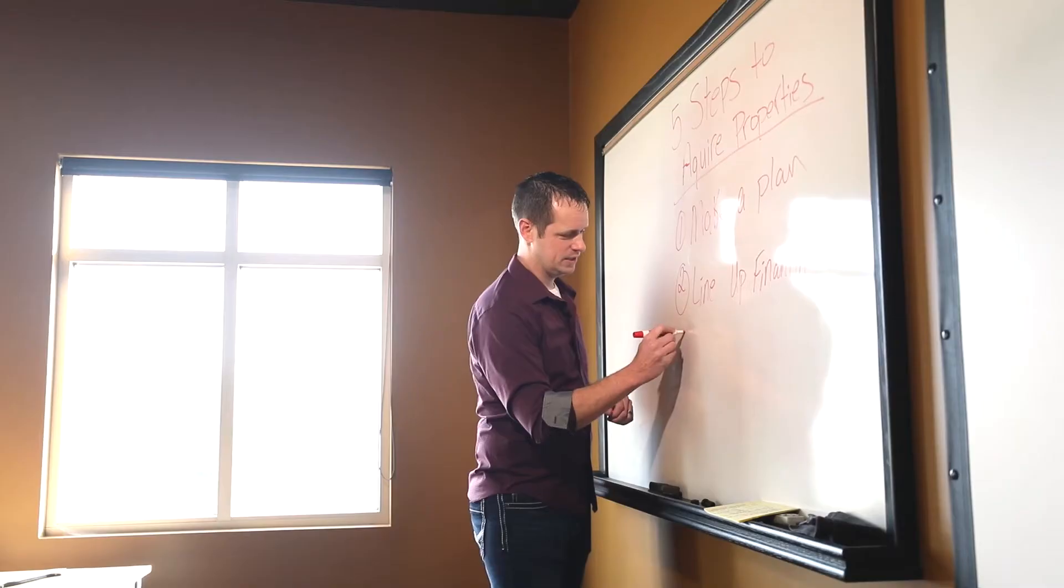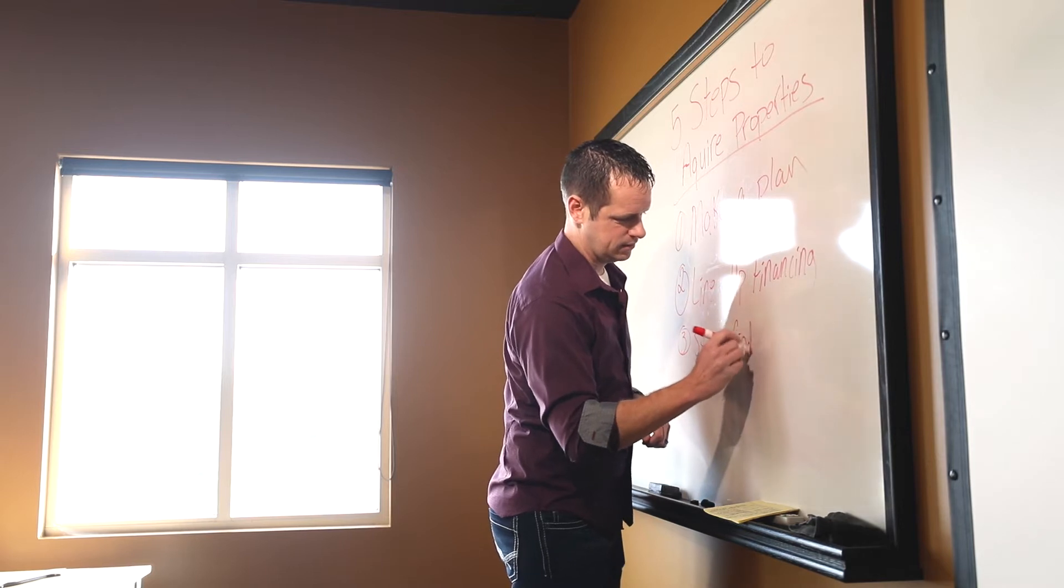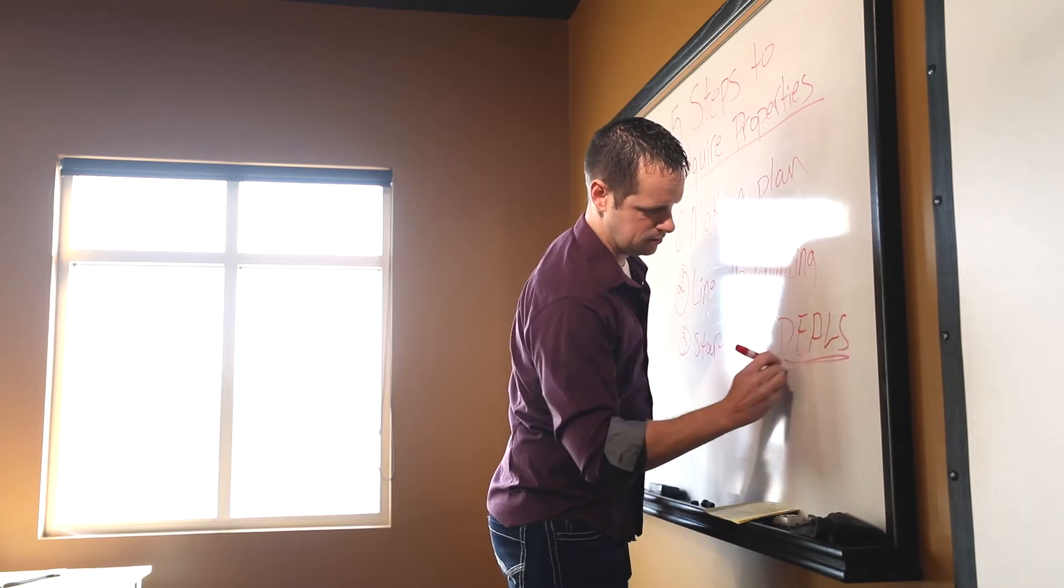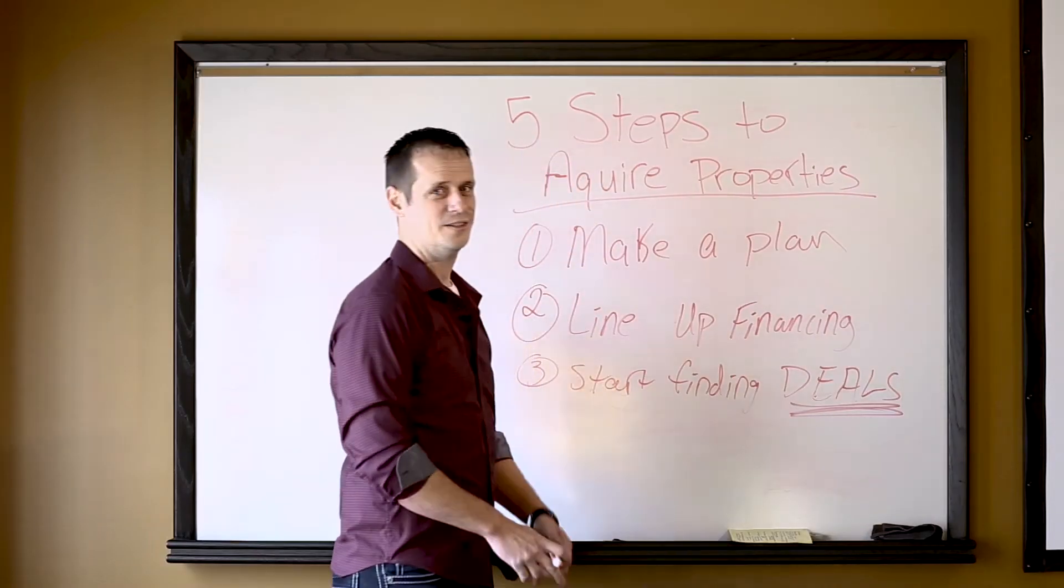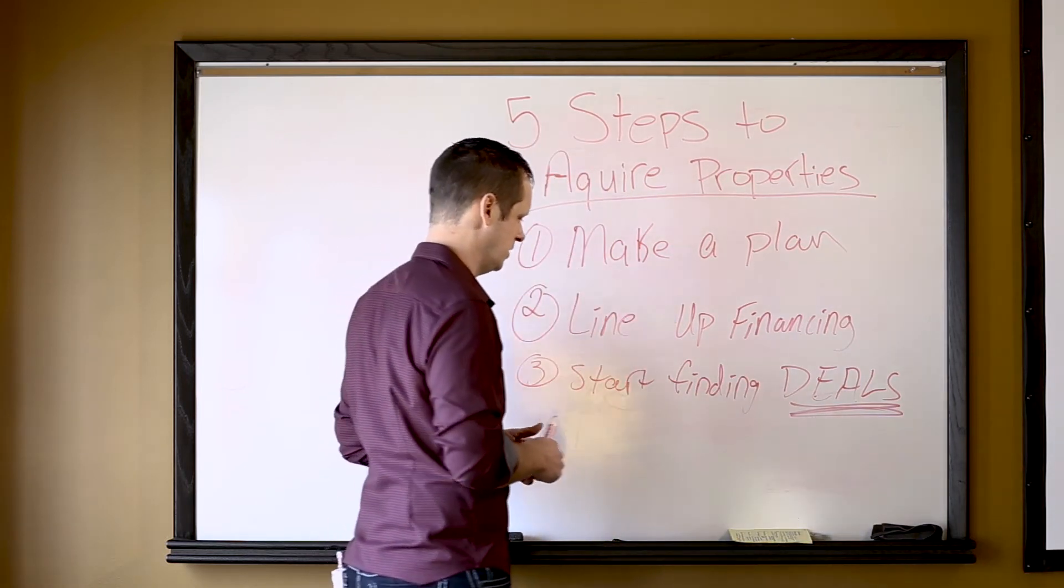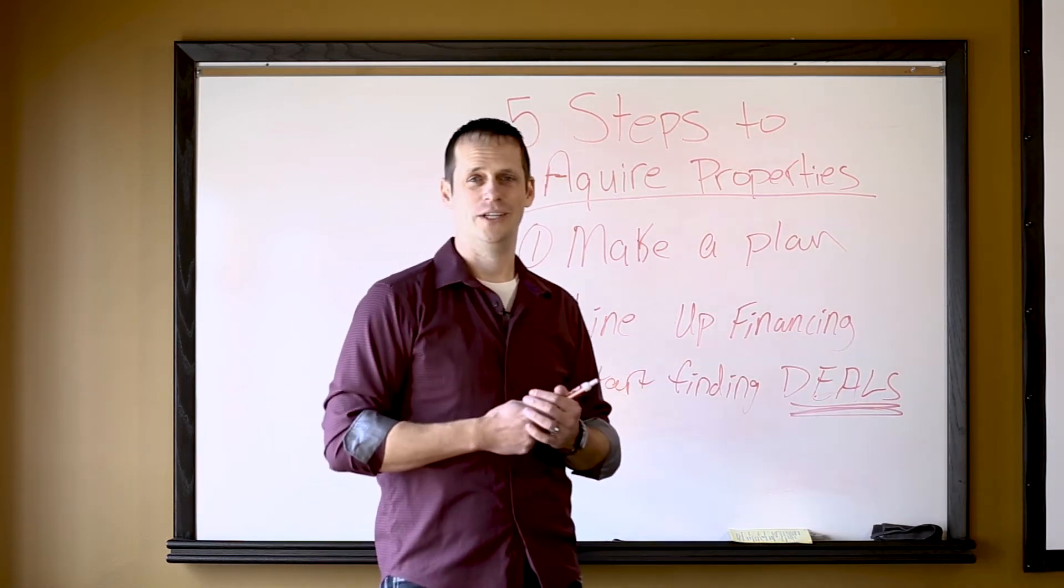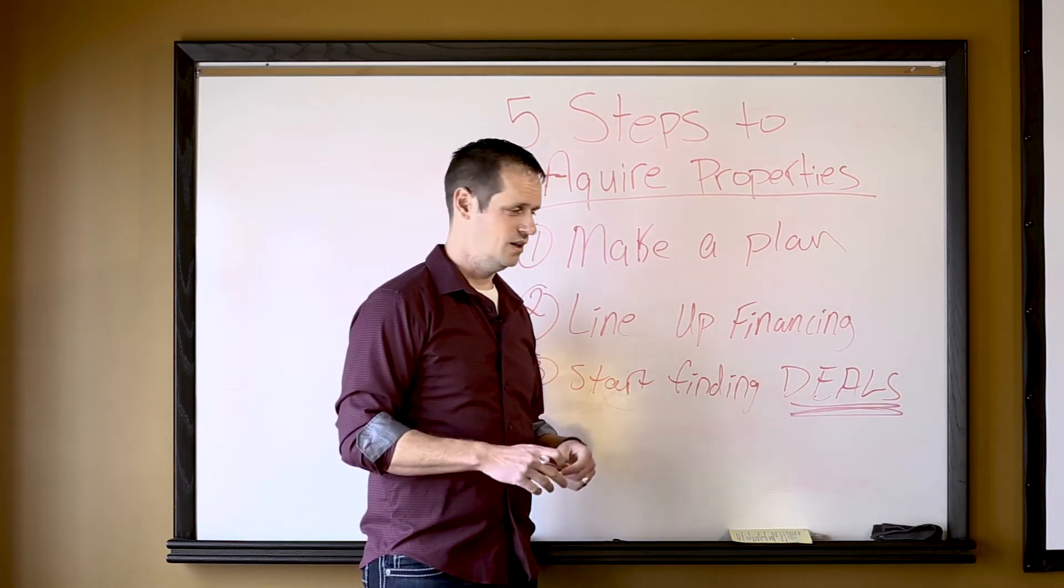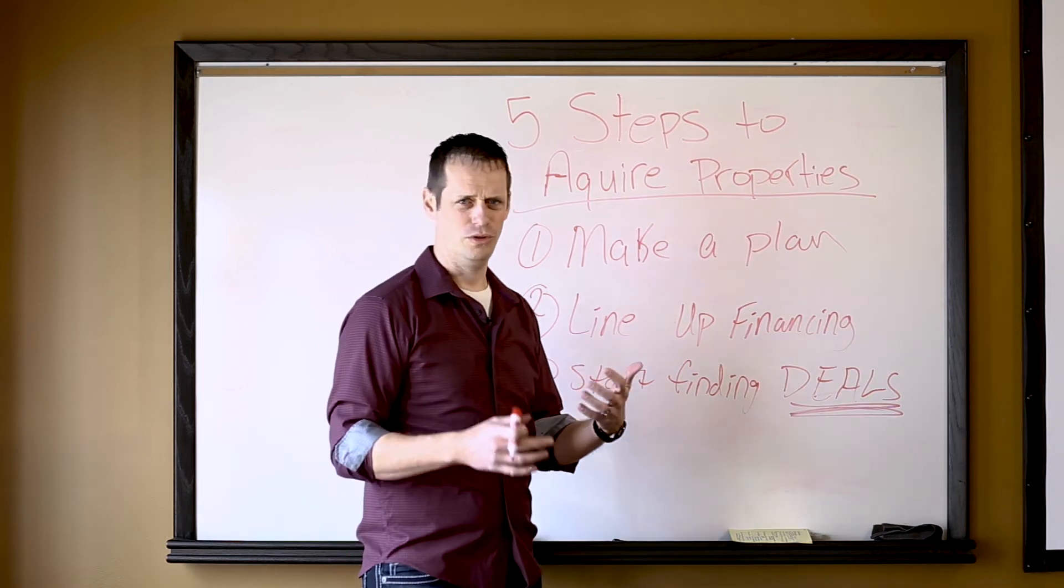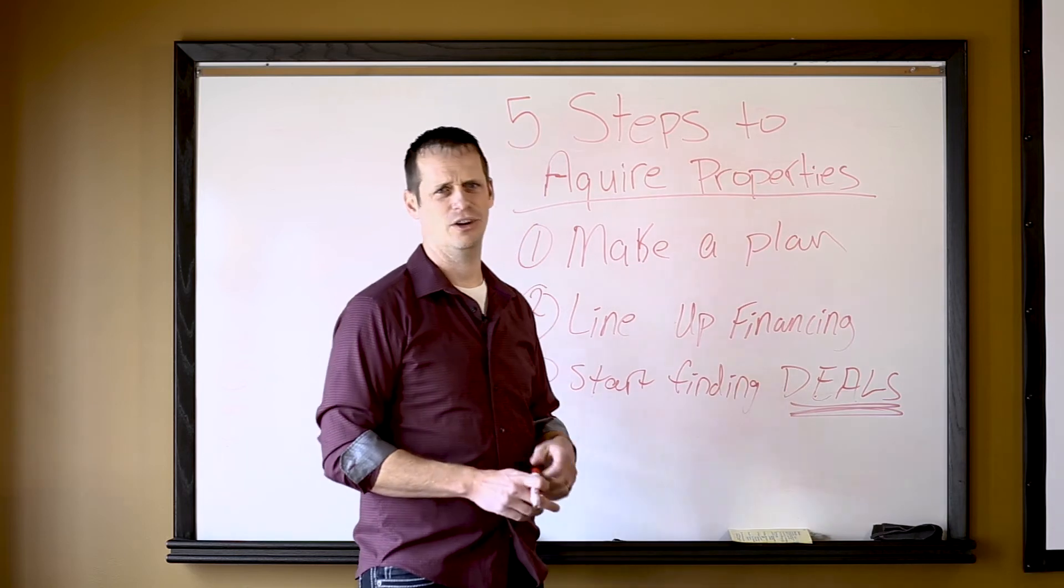So number three, start finding the deals. Start finding deals. Again, pretty straightforward, but how do you go about that? How do you find those deals? Well, the one and only way that I know is to look at properties, go out there and look at real estate. It's very easy. I don't care if it's retail or discounted, you know, whatever you decide, you go out there and you look at properties, look at as many as you can, start analyzing those deals.